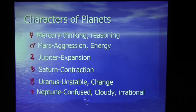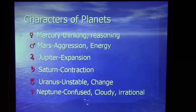Planetary astrology operates on the characters of planets. The characters of planets are shown here. We have Mercury: thinking, reasoning. Mars: aggression, energy. Jupiter: expansion. Saturn: contraction. Uranus: unstable, change. Neptune: confused, cloudy, irrational.